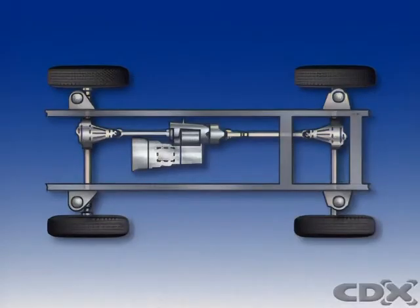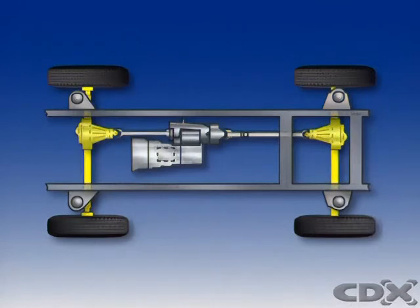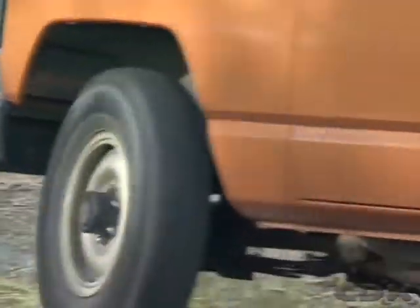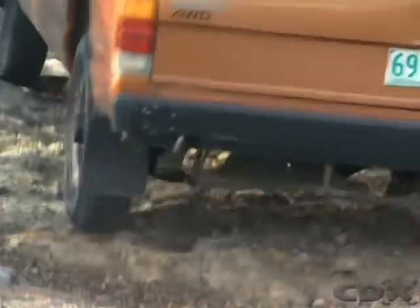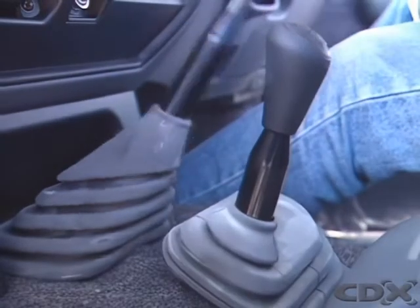A four-wheel drive vehicle has a propeller shaft, a final drive, differential gears, and axles for both the front and rear axle assemblies. A transfer case is attached to the transmission. Part-time four-wheel drive means the vehicle is usually in two-wheel drive and switches to full-time when needed by engaging the transfer case.